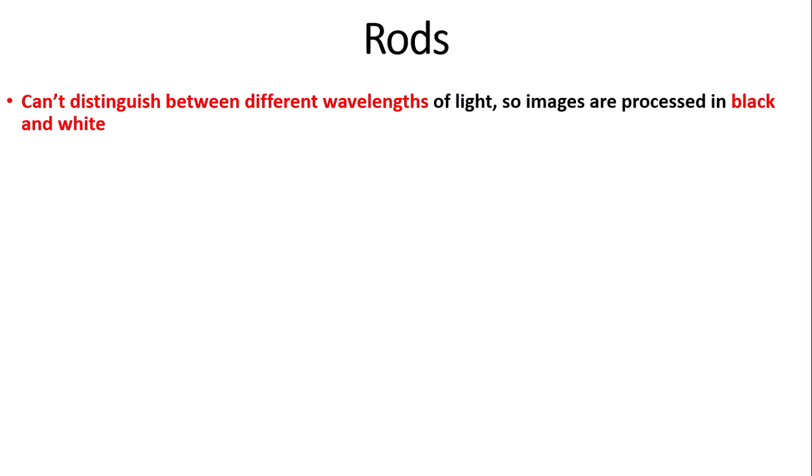So first we're going to talk about the properties of rods. Rods can't distinguish between different wavelengths of light, which means that images are processed in black and white. This is because different wavelengths of light reflect different colours, and as rods can't distinguish between these different wavelengths, you can't detect different colours — so images are processed in black and white.